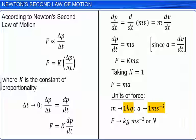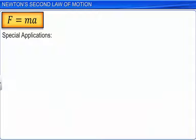There are certain special applications of Newton's second law of motion. When no force is applied on a body, there is no acceleration in its motion, since the mass of the body cannot be equal to zero. This is one way to write Newton's first law of motion.